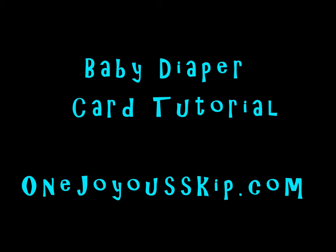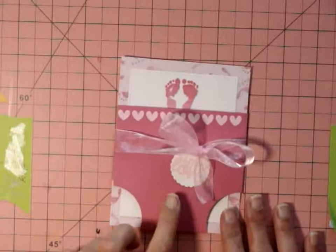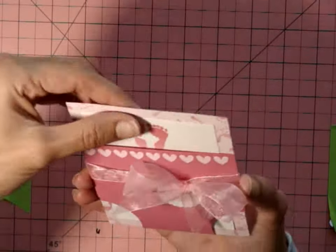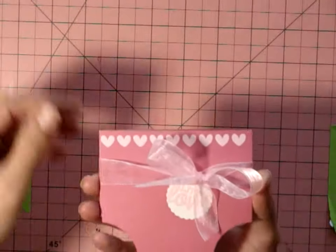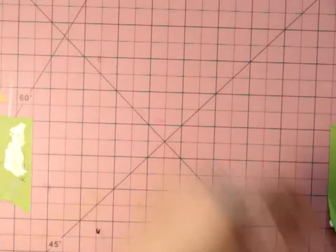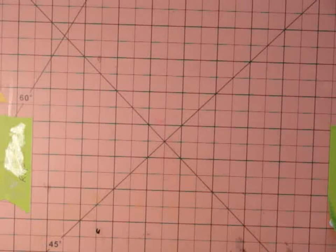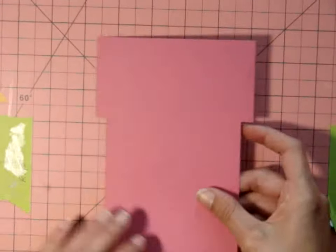Hi everyone, Mamie here. Today we're doing a tutorial on a baby diaper card, so let's get started. This one is for a little girl, and here's the diaper. It has a ribbon and some heat embossing on it.